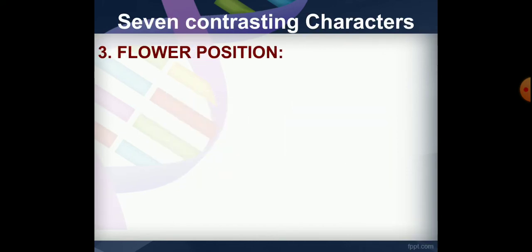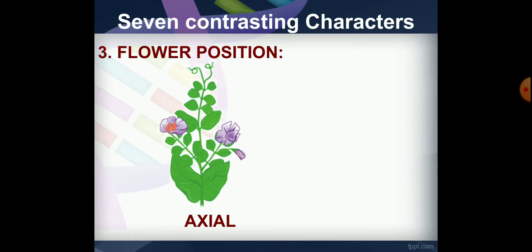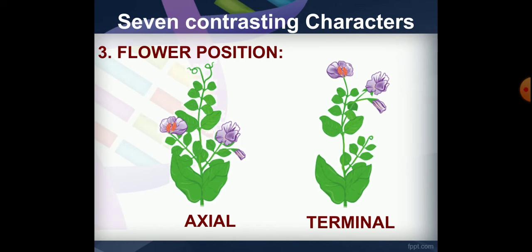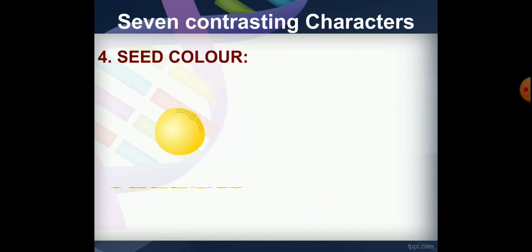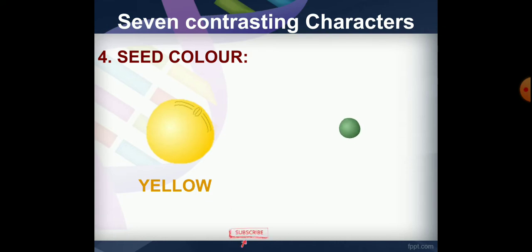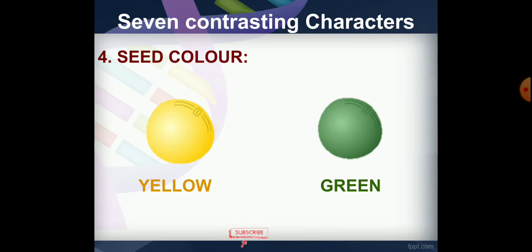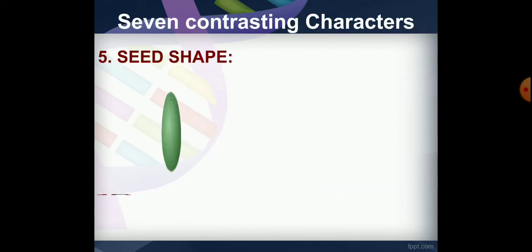The third character is flower position: axial, which is the middle flower, and terminal, which is the tip. The fourth character is seed color. Yellow is the dominant character and green is the recessive character.